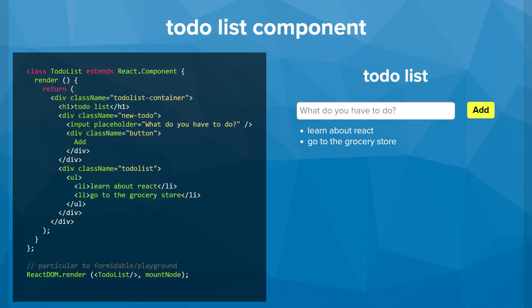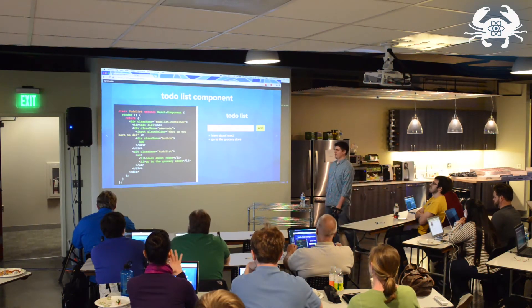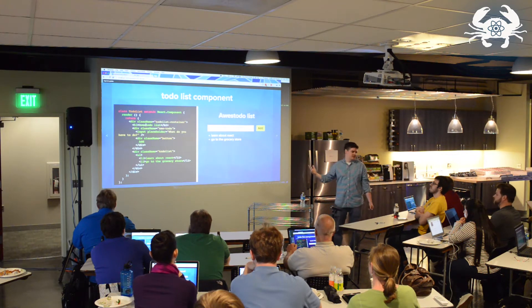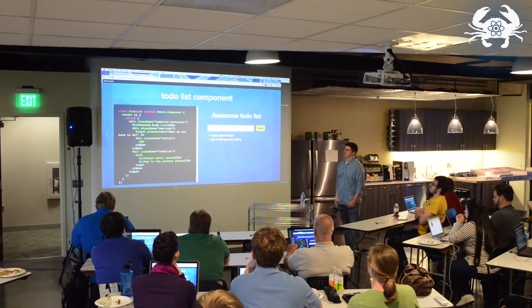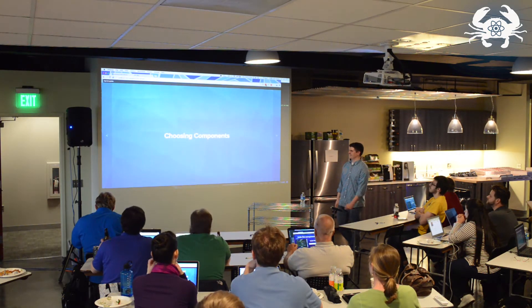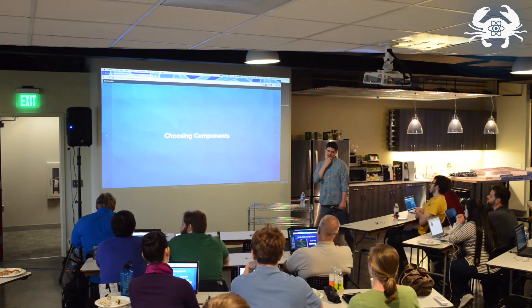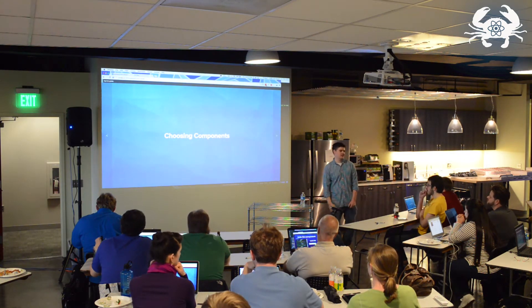This is actually a really cool tool — it's called Playground by Formidable Labs. On the left side we can put whatever code, and on the right it'll render. If Josh changes something on the left, it'll change on the right instantly. Now that we know what our basic building block is, how do we break down our existing site into components?